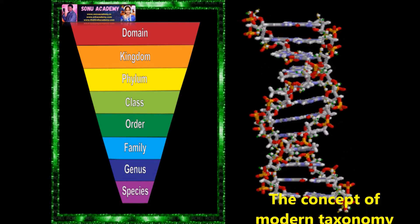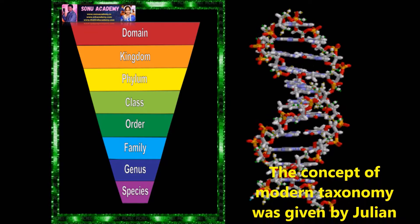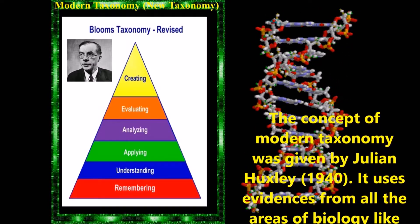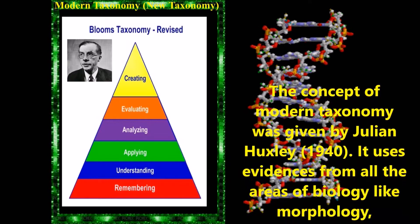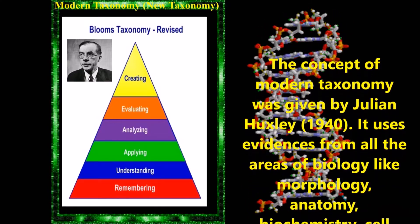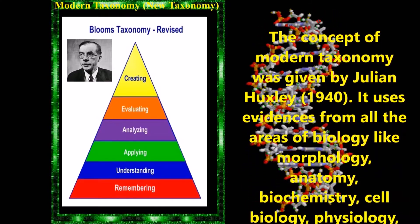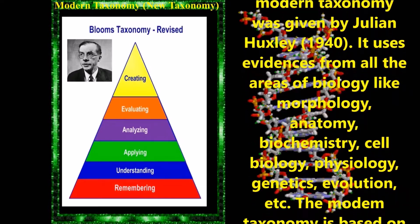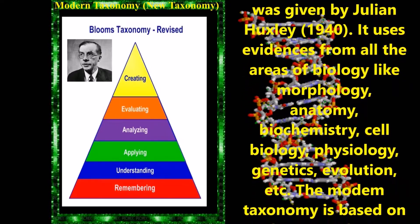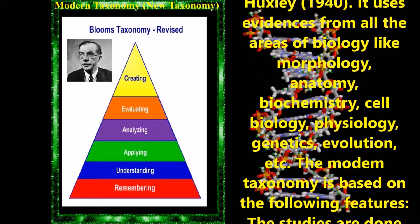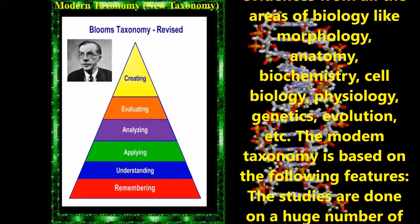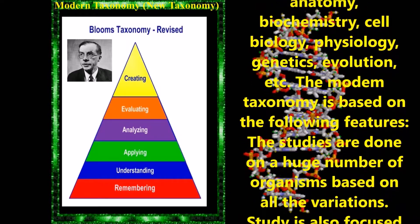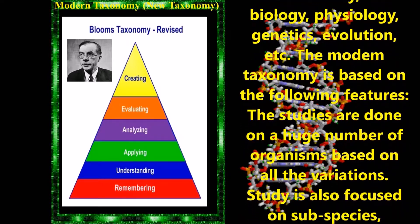Children, now let us discuss about modern taxonomy. The modern taxonomy, also called new taxonomy, was introduced by Julian Huxley in 1940. It uses evidence from all the areas of biology like morphology, anatomy, biochemistry, cell biology, physiology, genetics, evolution, etc.